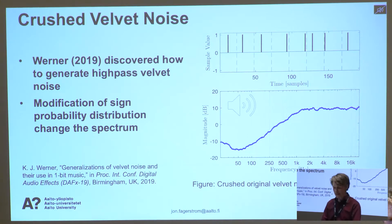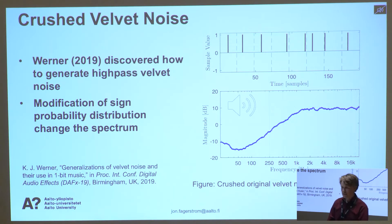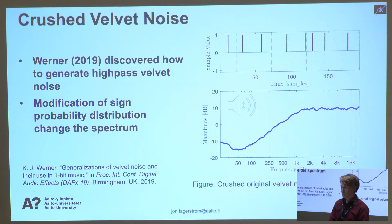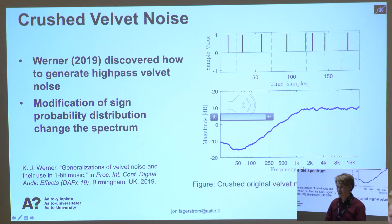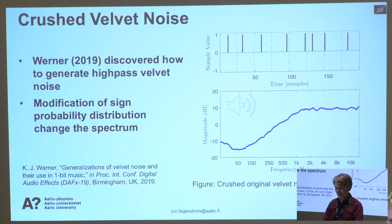Werner then discovered how to generate high-pass velvet noise. The idea is that if you modify the sign probabilities, you can get this kind of low-shelf spectrum. Here I show just the extreme case where you allow only positive impulses. Let's listen to that one — some kind of noise, should be a high-passed sound.